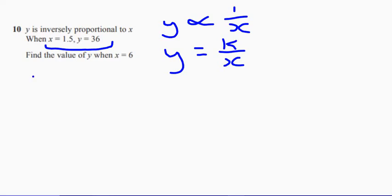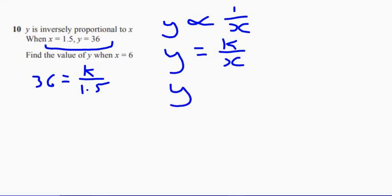So we've got 36 equals k over 1.5. If I multiply both sides by 1.5, so 36 times 1.5, that's going to give me 54. So I can rewrite this as y equals 54 over x.